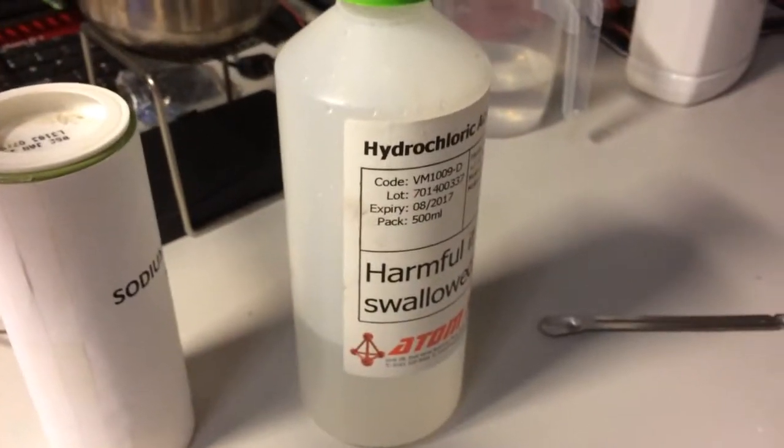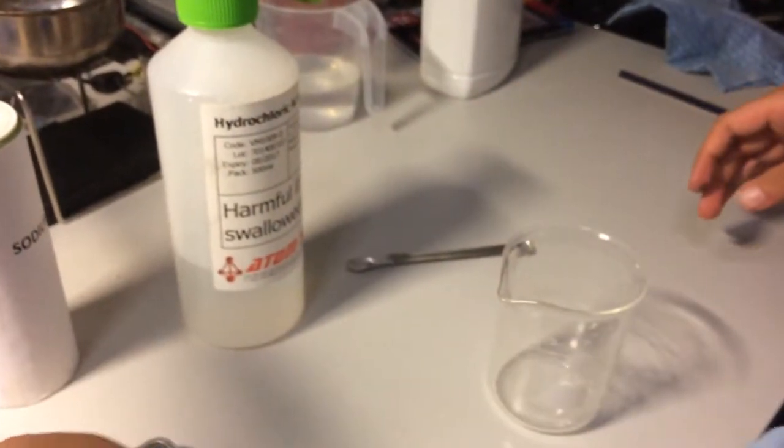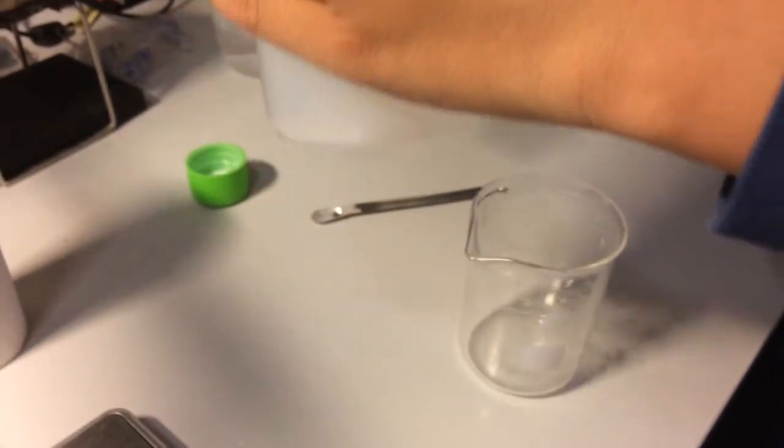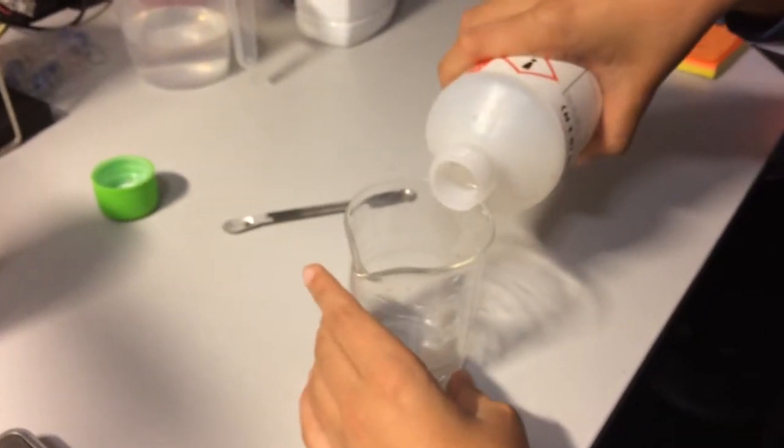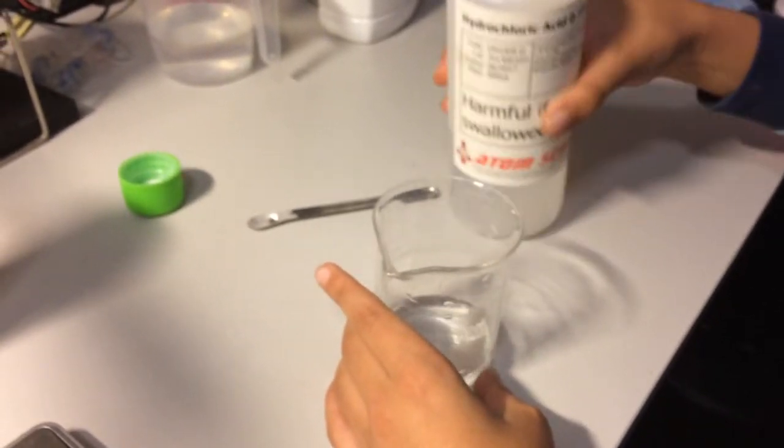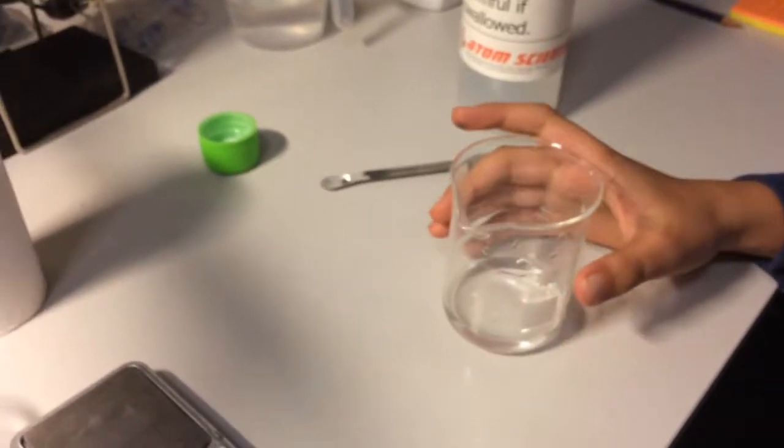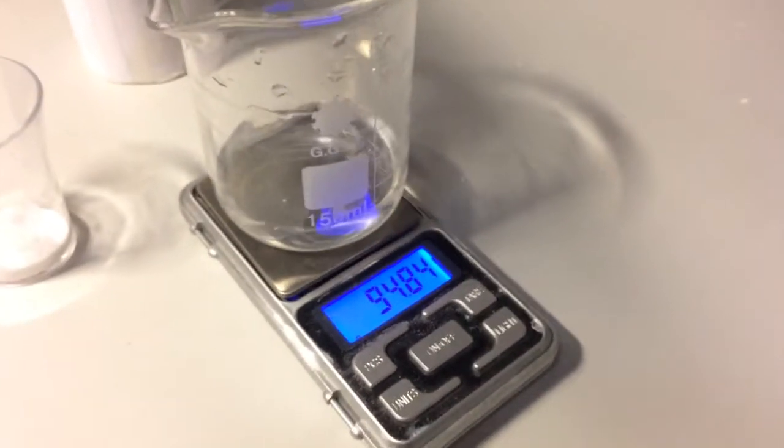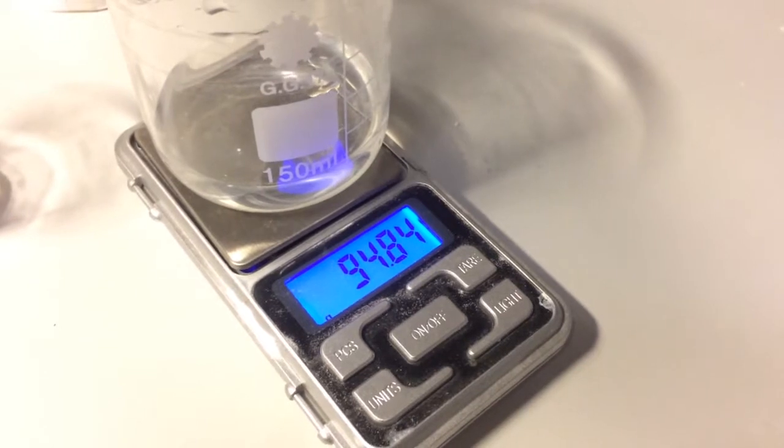Now we will measure 25 milliliters of hydrochloric acid and measure how heavy this is in grams. Here you can see it is 94.84 grams heavy.